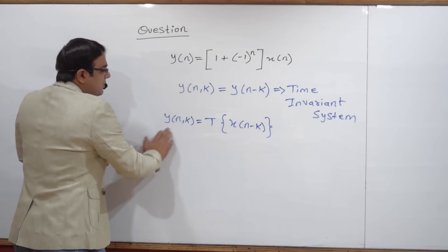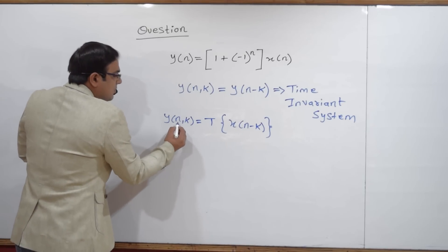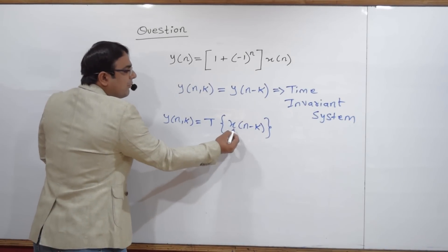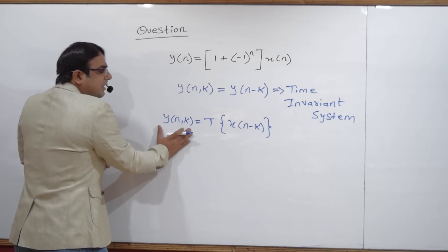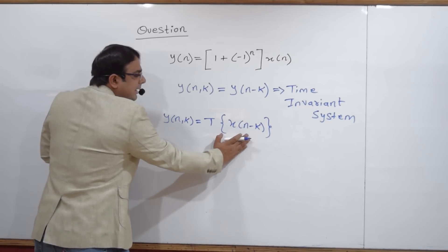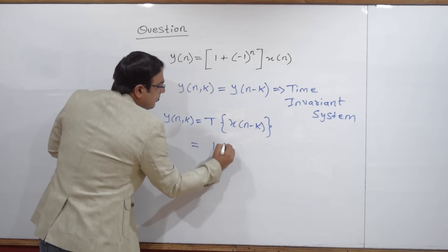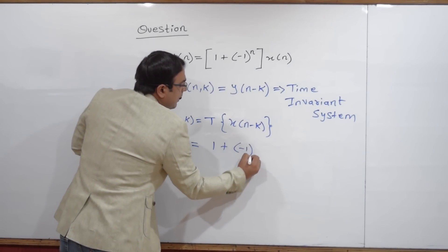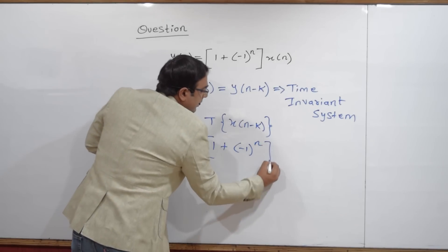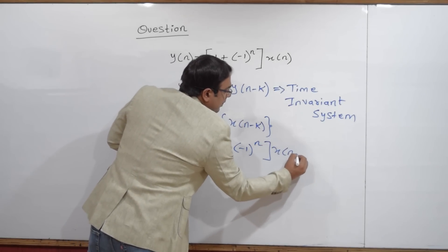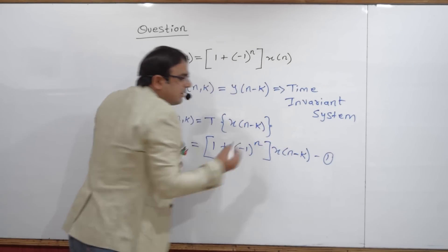So first, let us find y(n, k). As discussed, y(n, k) is the transformed form of x(n − k) — that is the output I will get when I provide delay in the input. So, providing delay in the input, my expression will be (1 + (-1)^n) multiplied with x(n − k). Let us mark it equation number 1.